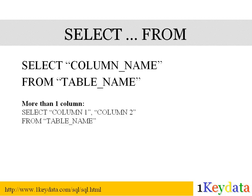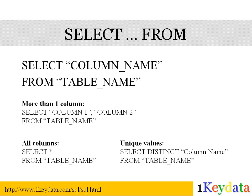We can select one or more columns. To select more than one column, we simply list all the column names we want to select, separated by comma. If we want to select all columns, we say SELECT star. If we want to select unique values, we add the keyword DISTINCT in front of the column name.